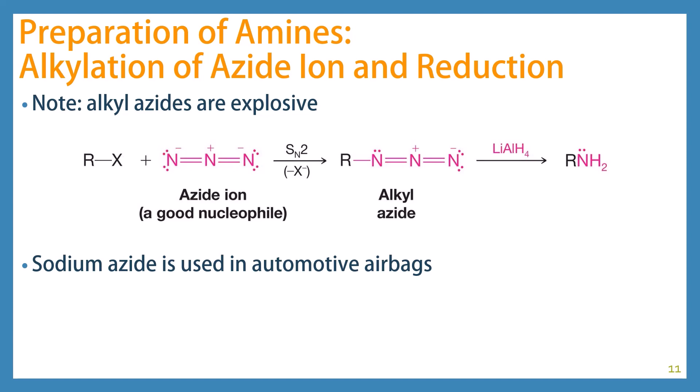Some new chemistry in this chapter: you can use azide to create amines. This is a good way to create a primary amine. If you have a primary alkyl halide, the azide ion — which is a good nucleophile — can come in and displace the halogen, giving you an alkyl azide. That can be reduced with lithium aluminum hydride to give a primary amine. Be careful though — alkyl azides are explosive. Sodium azide, a good source of the azide ion, is actually used in automotive airbags to initiate the reaction that deploys the airbag.